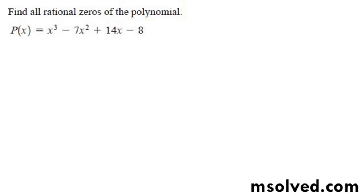Alright, so we want to find all rational zeros here. Potential values are going to be plus or minus 1, plus or minus 2, plus or minus 4, and plus or minus 8.